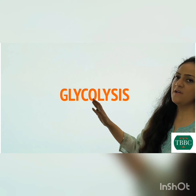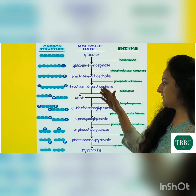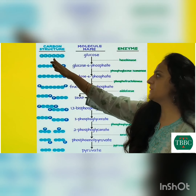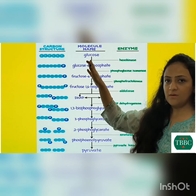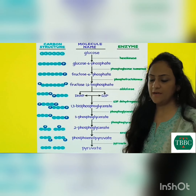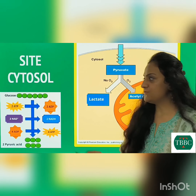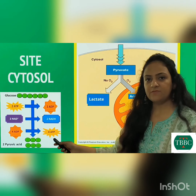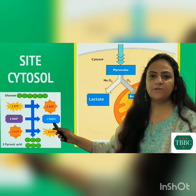Now what does the word glycolysis mean? Glyco means glucose, lysis means breakdown. So in this process there is a breakdown of glucose to pyruvate. There is a series of reactions which converts the 6-carbon compound glucose to the 2 three-carbon compound pyruvate, so 1 glucose forms 2 pyruvates.